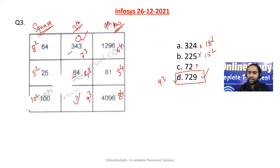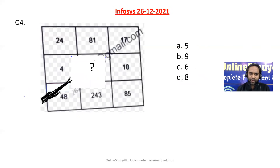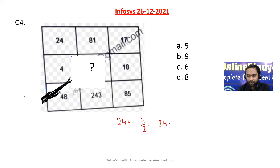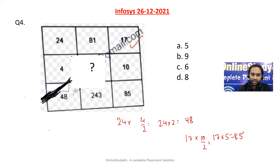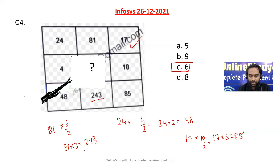For question four: they have done 24 × 4 ÷ 2, so 24 × 2 = 48. Then 17 × 10 ÷ 2 = 17 × 5 = 85. Now here we have 81, and we need to find what number gives 243. So 81 × 3 = 243, meaning we divide the option by 2: 6 ÷ 2 = 3. Different sets of questions will be there — maybe 10 sets — so these questions may not appear in every student's slot, but they were asked in Infosys.